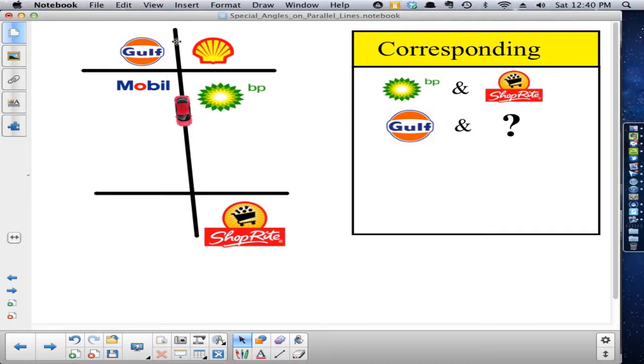My question, my first term that we have to review is this term: corresponding. I'm trying to talk about what it means when two angles are corresponding angles. And this example is, I'm trying to tell you that BP corresponds with ShopRite. If you notice, they're in the same relative position at their respective intersections. In other words, BP's in the lower right-hand corner of this intersection, and ShopRite's in the lower right-hand corner of this intersection. We would refer to them as corresponding.